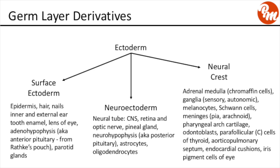The derivatives of the neural crest include the chromaffin cells of the adrenal medulla, the ganglia including sensory and autonomic, melanocytes, Schwann cells, meninges including the pia and the arachnoid, pharyngeal arch cartilage, odontoblasts, parafollicular cells of the thyroid — also known as C-cells — the aorticopulmonary septum, the endocardial cushions, and the iris pigment cells of the eye.